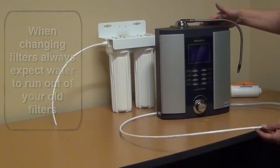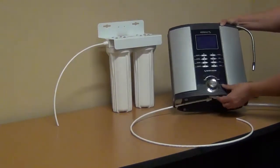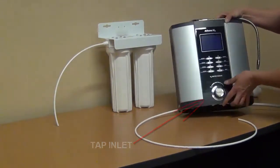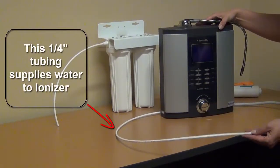This is the tube that connects to the bottom of your ionizer at the tap inlet underneath. This tube supplies the water to your ionizer.